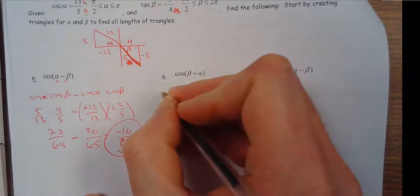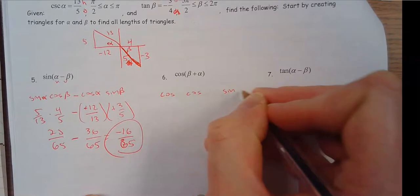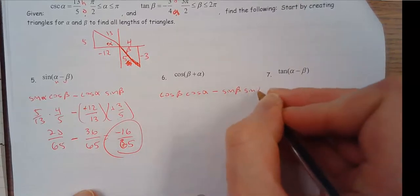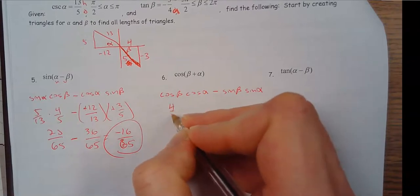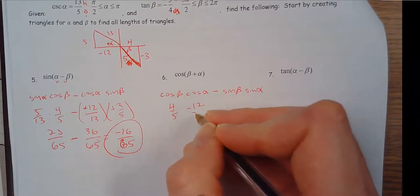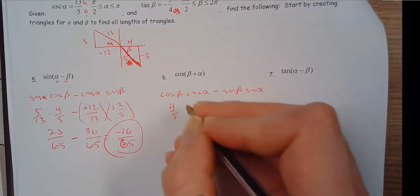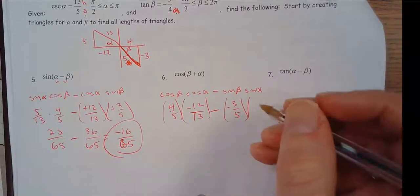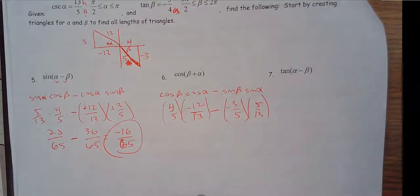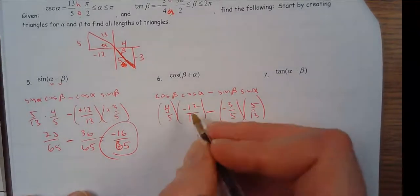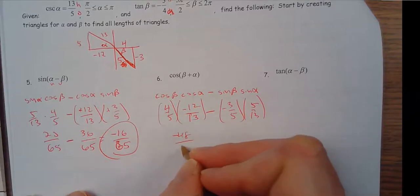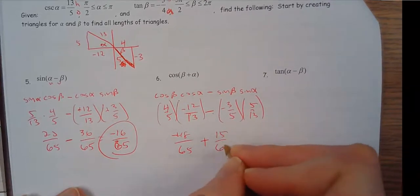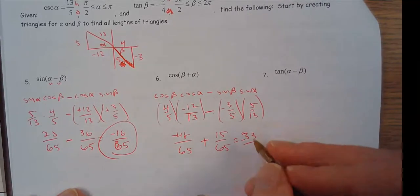So we have cosine, so remember cosine is cosine, cosine, sine, sine, sine. This would be beta, alpha, beta, alpha. And so 4/5, cosine of alpha, negative 12/13, minus, and then sine of beta is negative 3/5, sine of alpha, 5/13. So a lot of the stuff repeating here, just different order. So negative 48 over 65 minus, and then this would be a negative product, so I'm going to put a plus here. So 15 over 65, and that's negative 33 over 65.